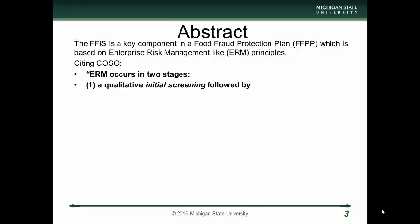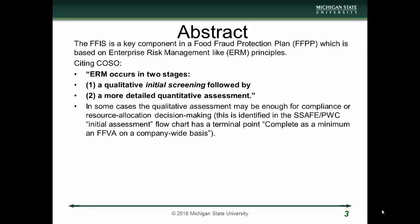We cite COSO, and the COSO organization has enterprise risk management definitions, training, regulations, and reports. For enterprise risk management, it's broken into two stages: the first is a qualitative initial screening, followed later by a more detailed quantitative assessment. This is from COSO principles. There's a first pass through to review the scope — the lay of the land — and then go into more detail where necessary, specifically for resource allocation decision making. In some cases, this qualitative assessment may be enough for compliance or that decision making.